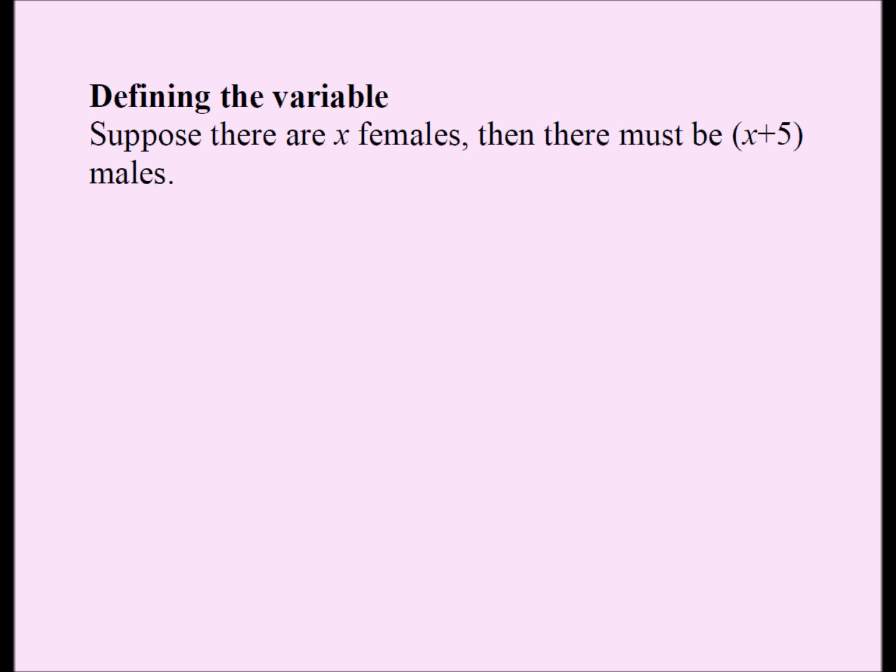So let's define our variable. We know from the question that there were five more men. So if there are x females, there must be x plus 5 males. Now let's write our equation, which is actually the most difficult part. From the question we know three-fourths of the females were married to two-thirds of the men. This is three-fourths of all the females—I have x females—and this is two-thirds of all the males—I have x plus 5 males—and they must equal each other because of our assumptions.